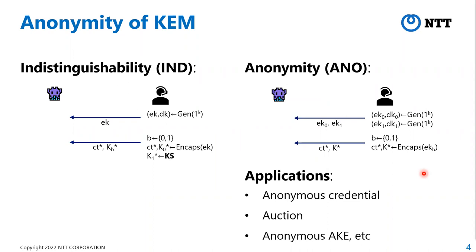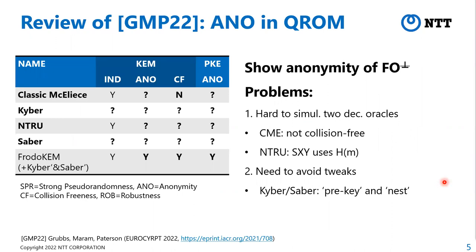A natural question is whether the KEM candidates of NIST PQC round three achieve anonymity in the quantum random oracle model, since we are considering PQC. This is summarized in the results of Grubbs, Maram, and Paterson at Eurocrypt. They studied this question and produced the following table. It shows that a variant of FO — specifically FO with implicit rejection — has anonymity and implies a robust hybrid PKE. Unfortunately there are many problems with the four finalists: Classic McEliece does not have anonymity, Kyber and Saber have no anonymity results, and NTRU has no anonymity details. Fortunately, they show that NTRU-Prime satisfies IND-CCA security in the QROM, anonymity in the QROM, and collision-freeness in the QROM, and the resulting hybrid PKE also satisfies anonymity.